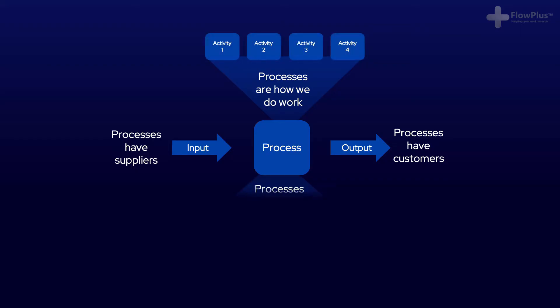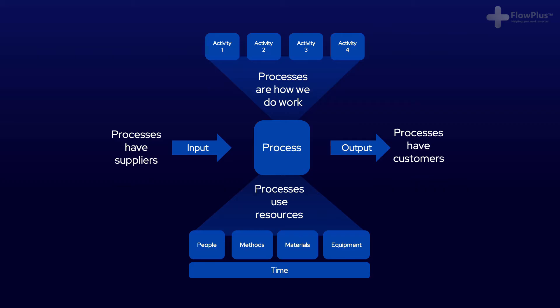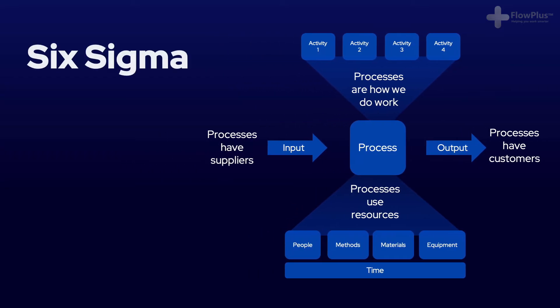As you can see in the diagram, processes use resources that will be people, methods, materials, equipment and time. In order to achieve consistent results to the customer, processes need to be capable. By this I mean they need as little variation and be as repeatable as possible. That is exactly where Six Sigma comes in.